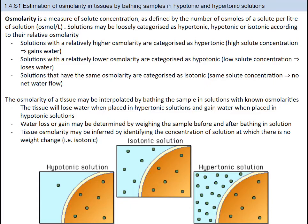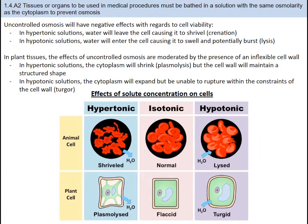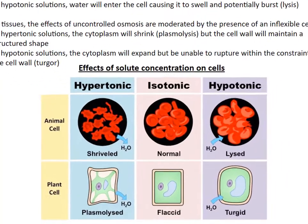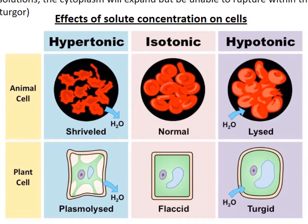Scientists calculate osmolarity for living cells by bathing the sample in solutions with known osmolarities and taking the mass of tissues before and after bathing. If the tissue lost water, it had a lower solute concentration than the testing liquid; if it gained mass, it had a higher solute concentration. The key is that water moves from hypotonic solutions to hypertonic solutions. In surgeries, it's important that tissue cells are placed in an isotonic solution to prevent osmosis. In animal cells, cells placed in a hypertonic solution would cause the cell to shrivel — called crenation — while cells in a hypotonic solution might cause them to burst, called lysis.